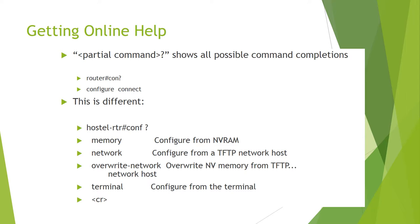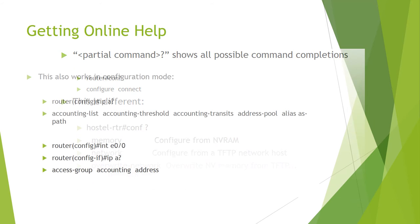Getting online help: a partial command shows all possible command completions. For example, Router# con ? shows: configure, connect. Router(config)# configure ? shows options: memory (configure from NVRAM), network (configure from a TFTP network host), override network (override NV memory from TFTP network host), terminal (configure from the terminal), cr.